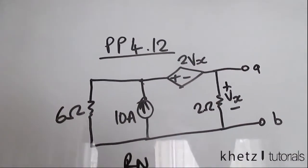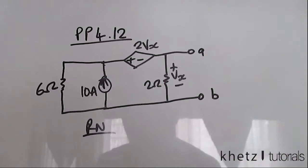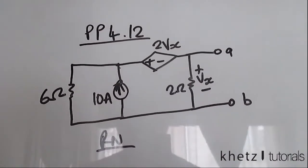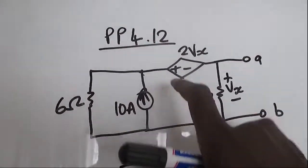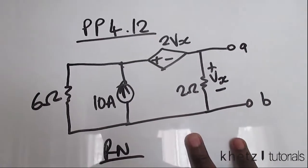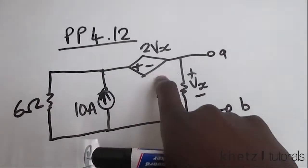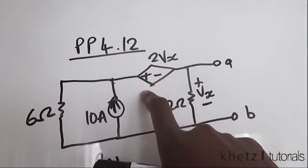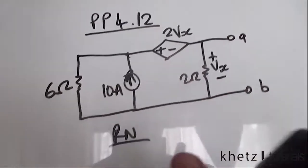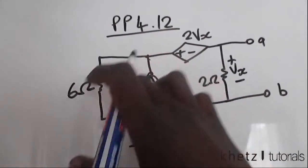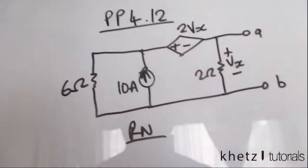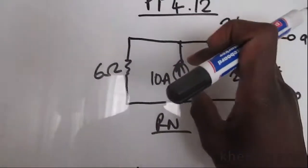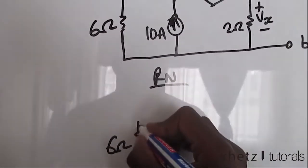To find the Norton equivalent resistance, we have to remove any independent sources. We have one independent source and one dependent source, so the dependent source stays intact. We're going to take this out because it's going to be an open circuit when you take it out. Now let's draw the new circuit after removing the current source.